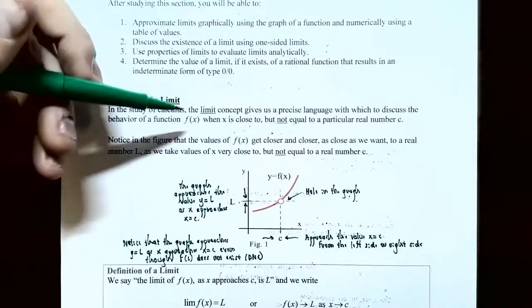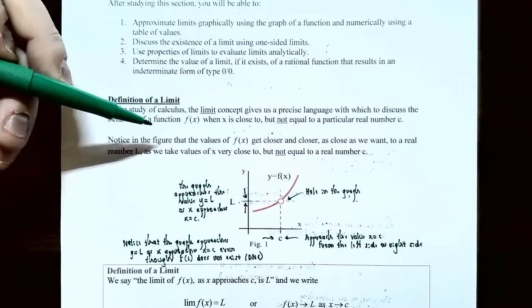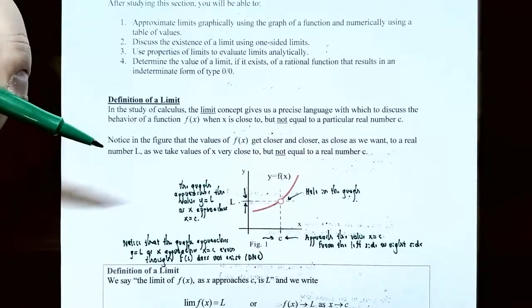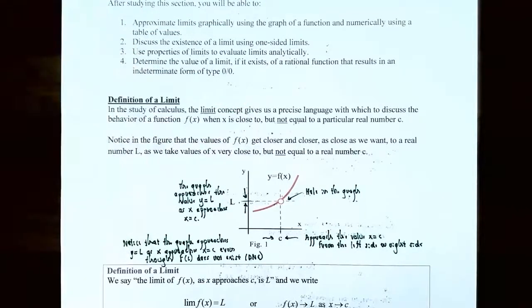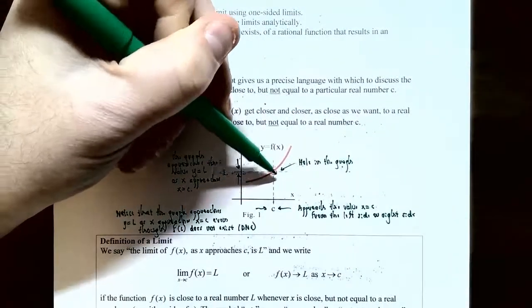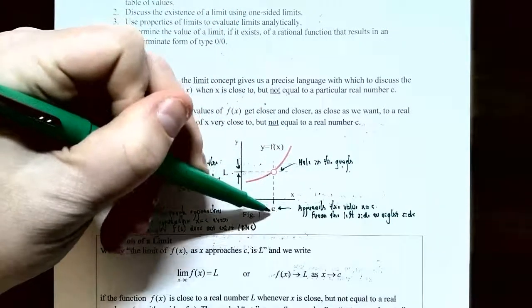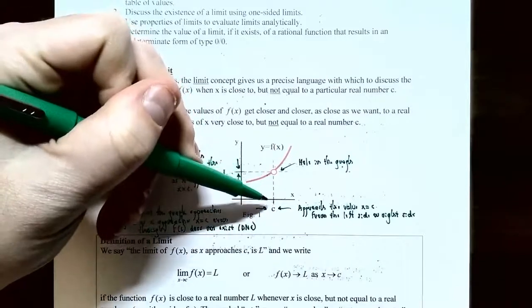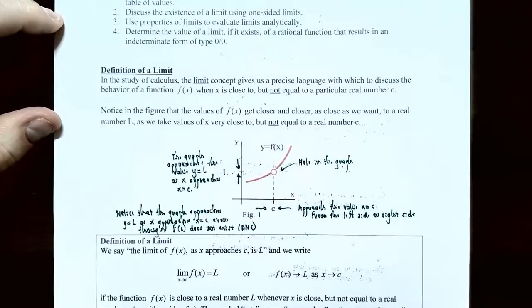So we're talking about f of x — those are the y values of the function. We're going to talk about the behavior of the function using a graph, a table of values, or even using algebra when x is close to but not equal to a particular real number c. So let's look at what happens with the graph in figure one. You have a graph that's increasing from left to right, with x equals c on the x-axis, and at x equals c there's a hole in the graph — an open circle, so that point is not included.